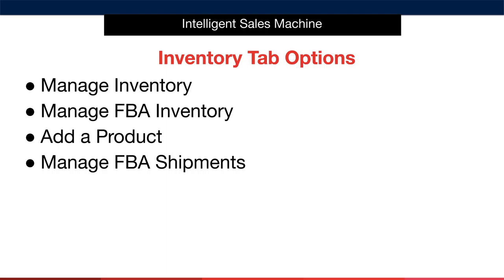Next, Add a Product — obviously where we are going first. It's no surprise that this is where we install a product into the Amazon catalogue. And lastly, Manage FBA Shipments, where we can review the status of any new, old, or in-progress inward FBA orders.